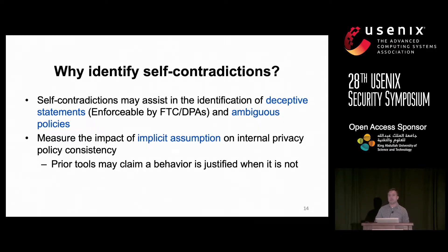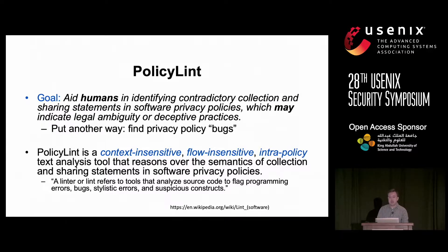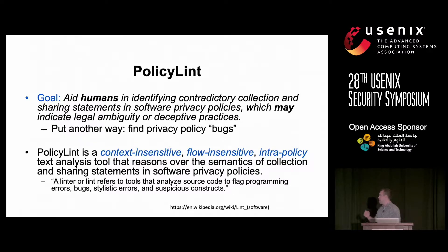Why should you care? Other than ambiguous policies, we also found that self-contradictions can lead to the identification of deceptive statements, which are enforceable by the FTC and the DPAs of the EU. Furthermore, in terms of tools doing automated behavior-to-policy compliance checking, we want to examine the impact of this implicit assumption, because they may claim a behavior is justified when in fact it is not. So we created a tool called PolicyLint, whose goal is essentially to identify bugs in a privacy policy — specifically self-contradictory sharing and collection statements. The goal of PolicyLint is to aid human analysis; we're looking to automate as much as possible, but a human is still needed in the pipeline because natural language understanding is not quite there yet, and interpreting some statements requires a legal expert to determine intent.